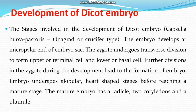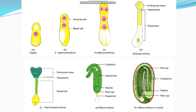The embryo undergoes globular and heart-shaped stages before reaching a mature stage. The mature embryo has a radicle, two cotyledons, and a plumule. Diagrams show: (a) the zygote, (b) the zygote divided into a two-celled pro-embryo.